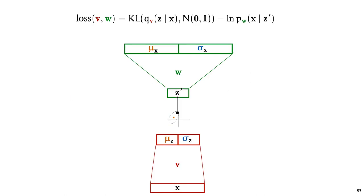Here's what the full network looks like. We feed the encoder an x, which produces a distribution on the latent space. From this distribution we sample a point z', we feed that to the decoder, we get a probability distribution on our output space x, and we compute the log probability of our data under that distribution. To get the loss, we sum this final log probability together with the KL divergence between the distribution in the middle and the standard normal distribution. The only problem left to solve is that in the middle there is a sampling step, which is not differentiable, so we cannot backpropagate through it to get gradients for parameters v.